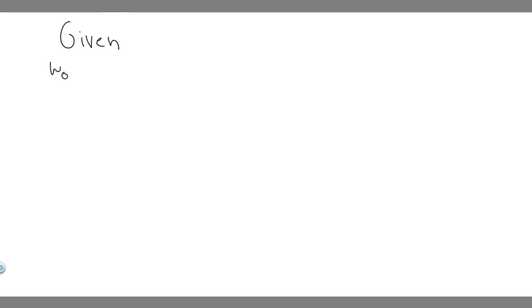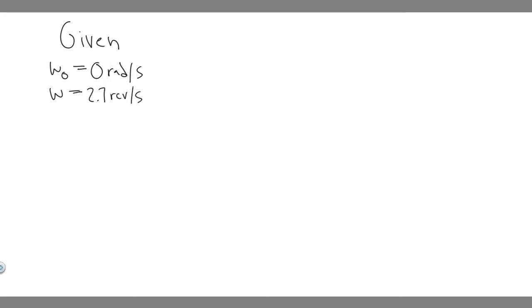Essentially what we're trying to do in this problem is solve for torque. Let's write down what we're given. The initial angular velocity, W₀, is 0 radians per second since the bat starts from rest. The final angular velocity is 2.7 revolutions per second. The time, delta T, is 0.2 seconds. The length of the bat is 0.95 meters, and the mass is 2.2 kilograms.